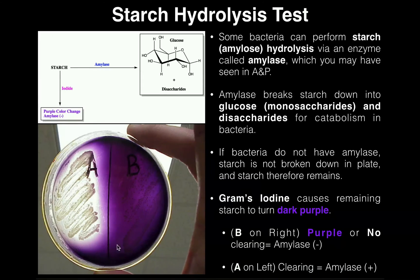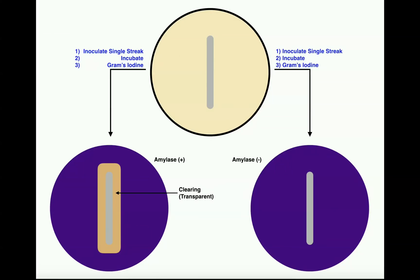When we do this test, we're not going to do one species on one half of the plate and a different one on the other side. The way we're actually going to do it is one species per plate, and we do what's called a single streak. The reason we do a single streak is because it's a lot easier to read whether or not there's clearing around that smear because it's just a line. And so we're only expecting, if there's clearing, that to be directly around this line.